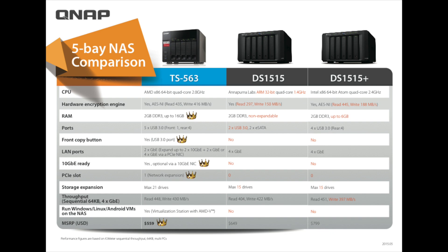Now let's look at the MSRP pricing for each of the units. The QNAP TS-563 lists at $559 US dollars. The DS-1515 lists at $649 US dollars. The DS-1515+ is listed at $799 US dollars.